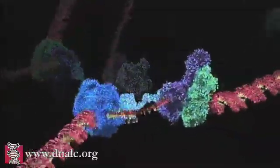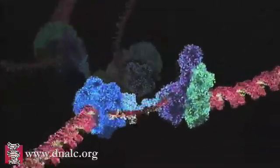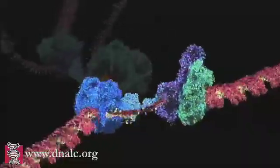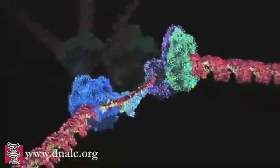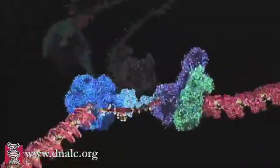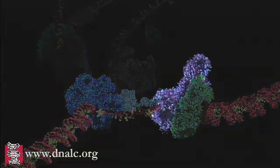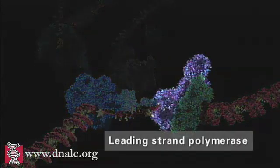The 3' DNA strand, also known as the leading strand, is diverted to a DNA polymerase and is used as a continuous template for the synthesis of the first daughter DNA helix.